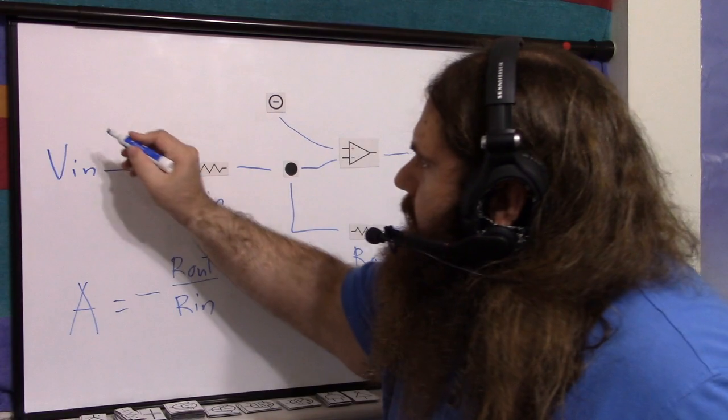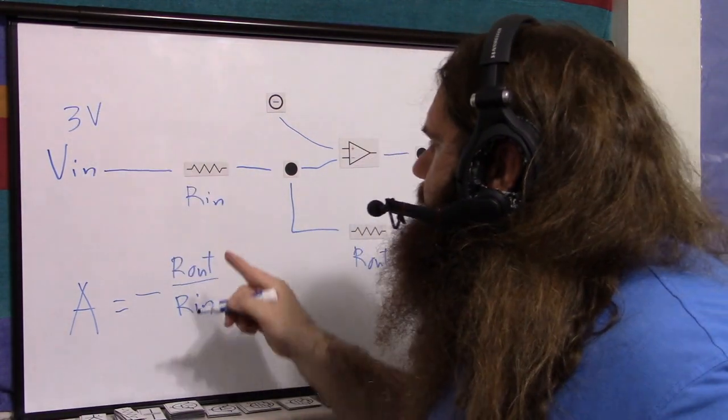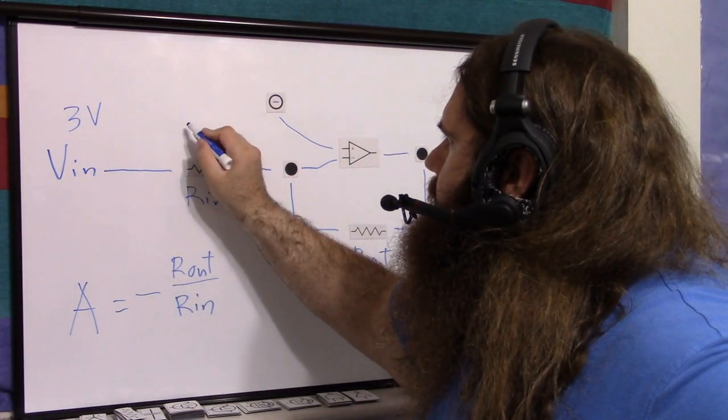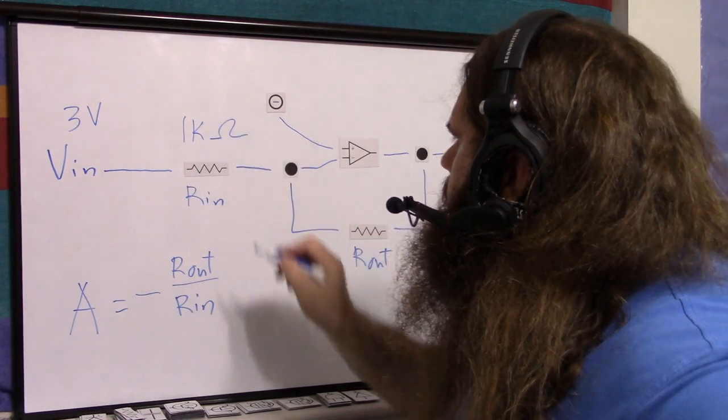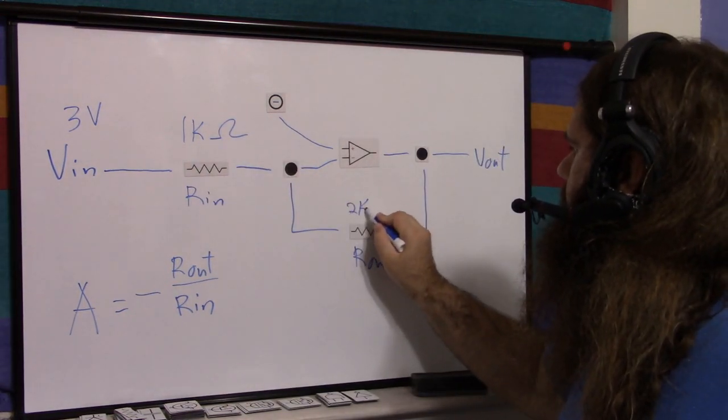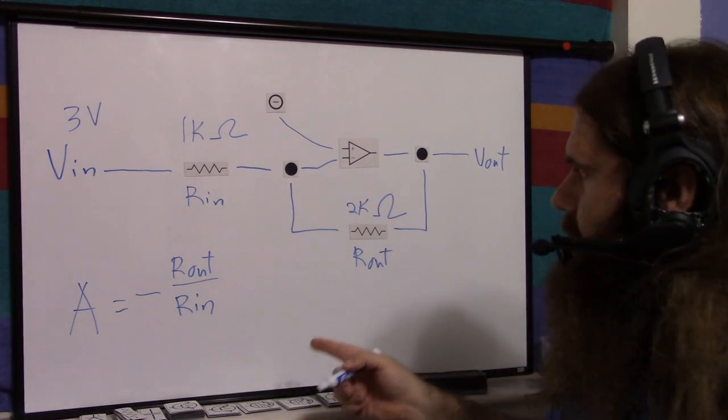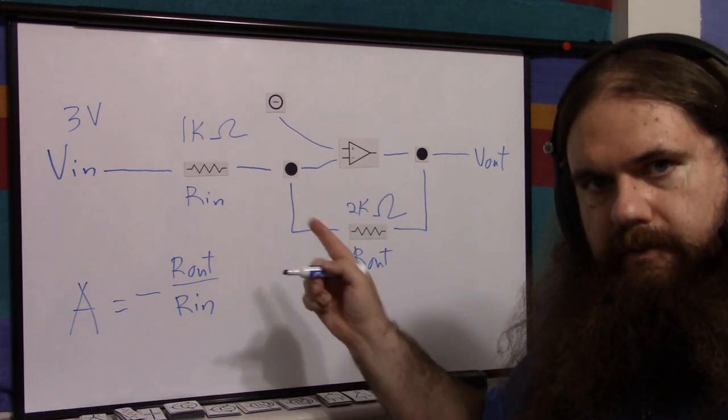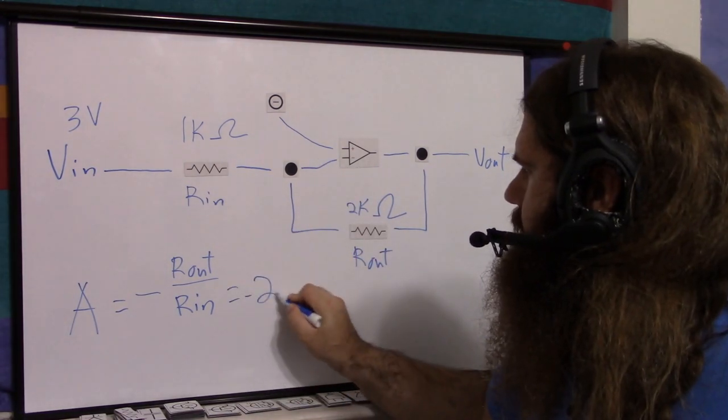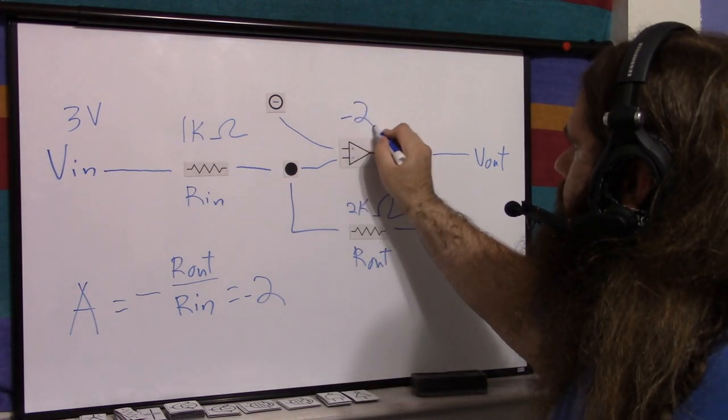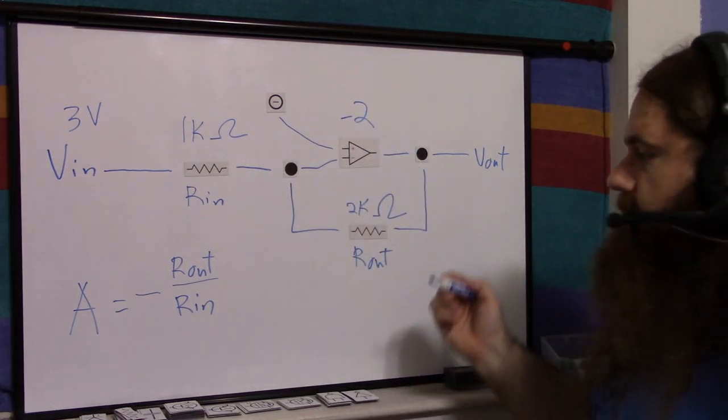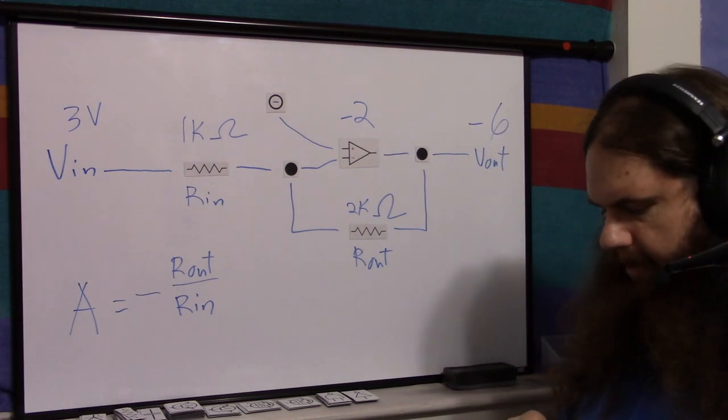So let's say our voltage in is three volts. Let's say this resistor is 1k ohms. This resistor is 2k ohms. Rout divided by Rin, 2 divided by 1 is 2, negative 2. So it's negative 2 gain. I'll write it here, negative 2 gain. So 3 times negative 2 is negative 6. So our voltage out is negative 6.